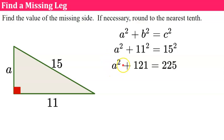So now to solve for a squared, I need to subtract 121 from each side. 225 subtract 121 is 104. Remember this is a zero pair, leaving me a squared equals 104.